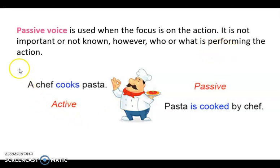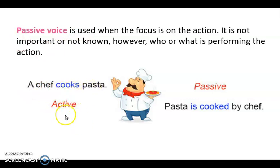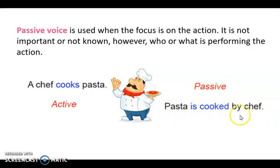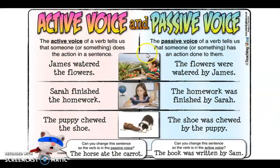Recuerda, la voz pasiva se utiliza cuando nos enfocamos en la acción. No es tan importante saber quién realizó esa acción, sino la acción en sí. Chequemos el ejemplo: 'A chef cooks pasta' — es forma activa, un chef cocina pasta. Si lo ponemos en passive, sería 'Pasta is cooked by chef' — la pasta es cocinada por el chef.